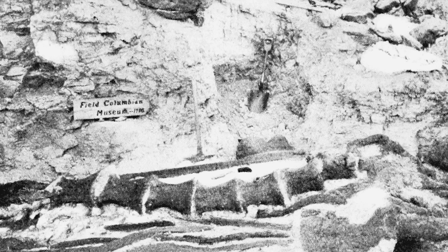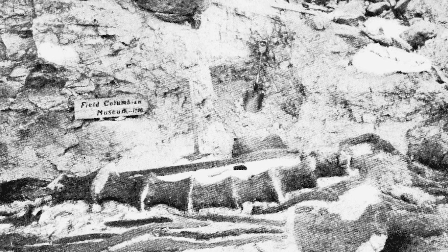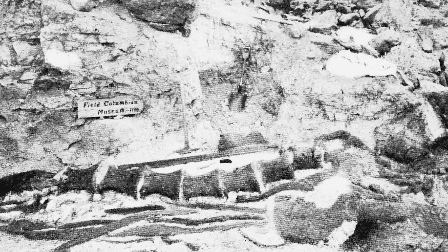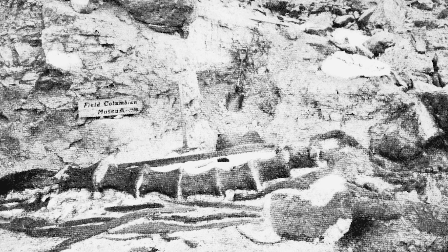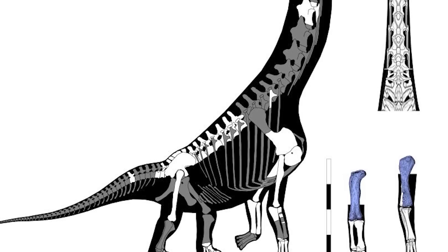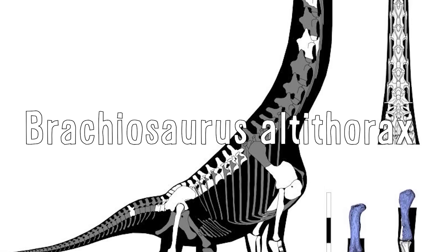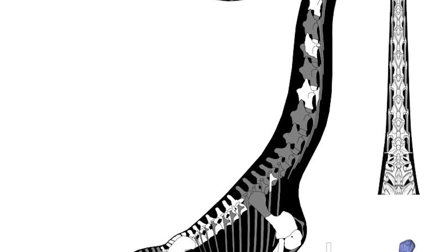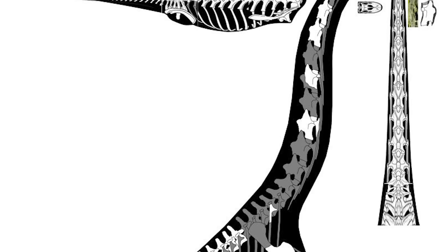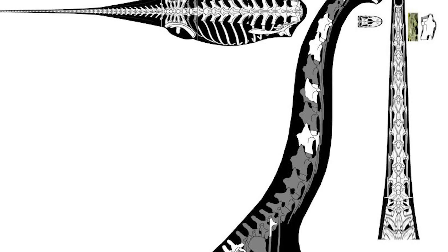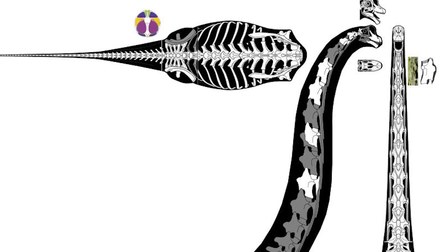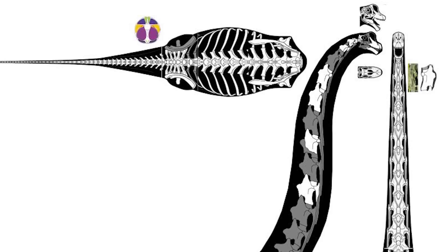They were discovered in the Brushy Basin Member of the Morrison Formation by paleontologist Elmer Riggs and his crew from the Field Columbian Museum, now the Field Museum of Natural History of Chicago. The full type species was named Brachiosaurus altithorax in 1903, with Brachiosaurus meaning 'arm lizard' and the species name coming from the apparently unusually wide and deep chest cavity — altus meaning 'deep' in Latin, and thorax referring to the chest area of the body.